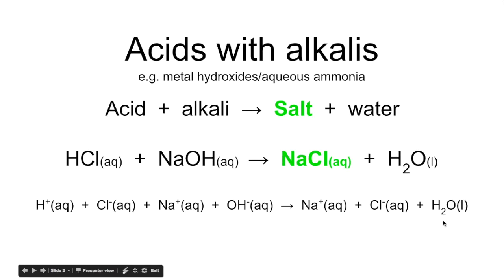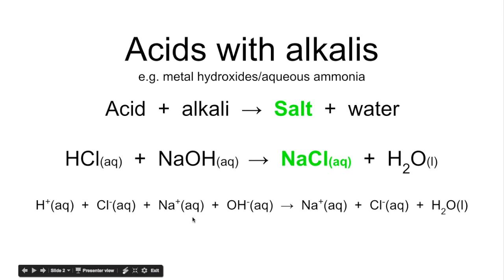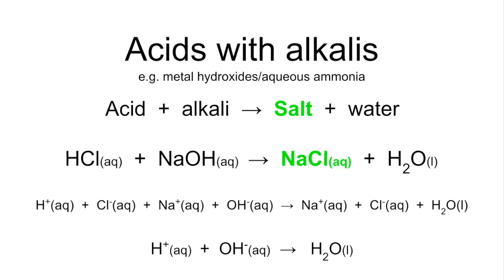Just like in a mathematical equation, when you have like terms on both sides of the arrow, we've got Na⁺ on the left and right, so they cancel out because they're not changing, and so too with the chloride ions. What we're left with is the ionic equation for this reaction, which essentially just shows what is changing.